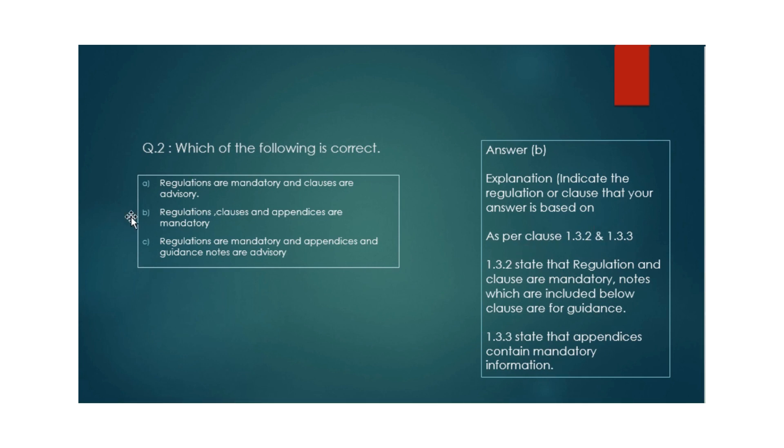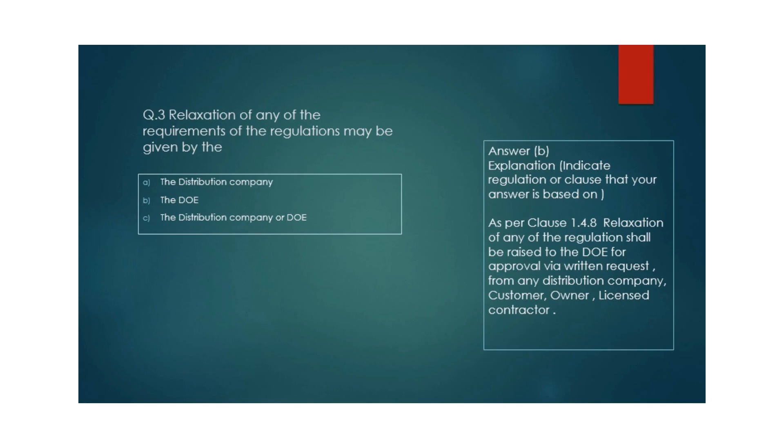Question 3: Relaxation of any of the requirements of the regulations may be given by which company? Options: the Distribution Company, the DOE, the Distribution Company or DOE. If you need some relaxation to waive off some regulation during construction or design phase, which organization will give you permission?